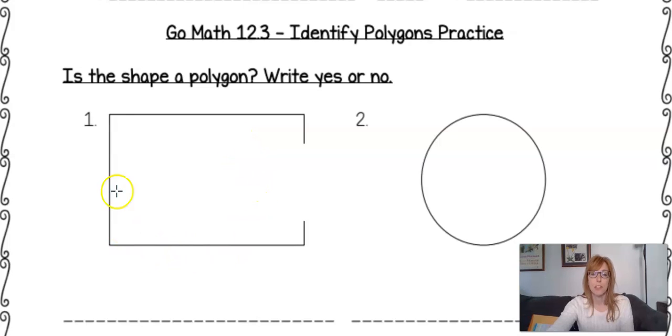So you want to think to yourself, what is the answer to one and two? So you think about the rules of a polygon, and it is a closed shape that is made up of line segments and no curves. So you can see that this is open here.